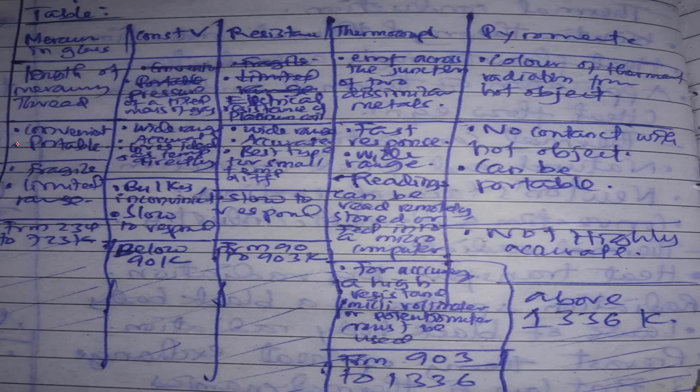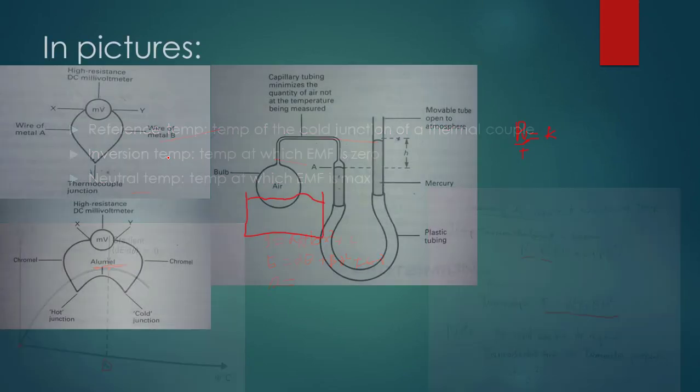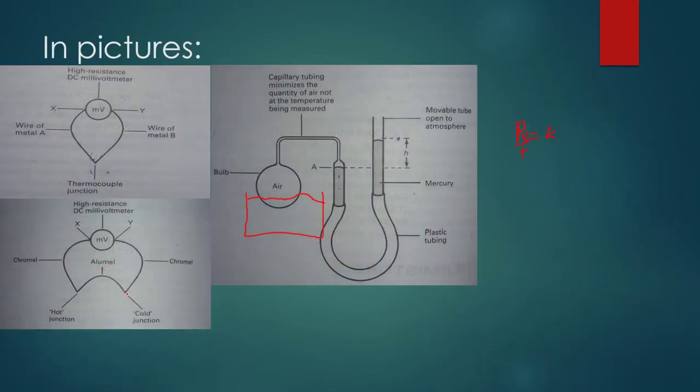Looking at advantages: Mercury in glass is convenient and portable. Constant volume has wide range, is accurate, and gives ideal gas temperature directly, meaning you can see the measured temperature directly without conversion like other thermometers.